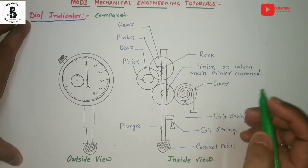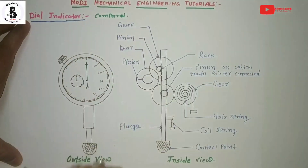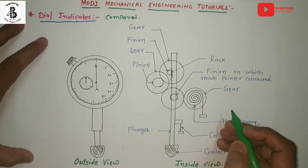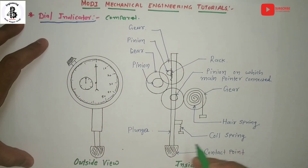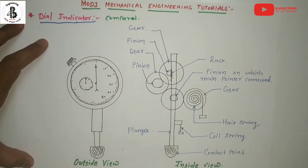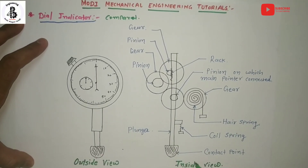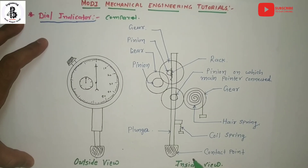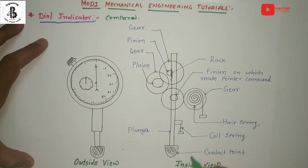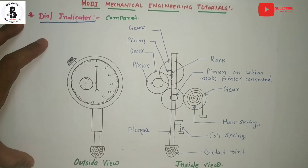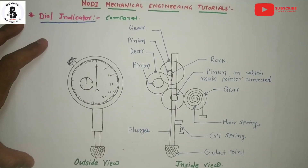Now let us look at the dial indicator. Here is the outside structure of the dial indicator, showing the basic mechanical movements used as an indicator. This is the inside view of the dial indicator.